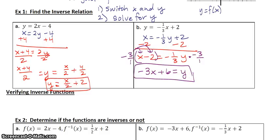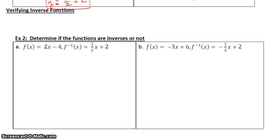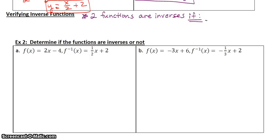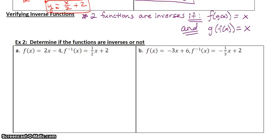Another thing we're going to do is verify if two things are inverses. They'll give you two different functions and ask you to verify whether they're inverses or not — your answer will be yes or no. Two functions are inverses if f of g of x equals x AND g of f of x equals x. If both of those are true, they're inverses. You have to show your work to verify; you can't just say yes or no.